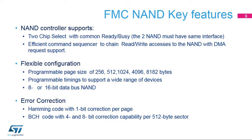The FMC controller features a NAND memory controller supporting up to two NAND devices of the same type and a common Ready-Busy signal, programmable page size up to 8 kilobytes, programmable timing parameters, and an 8-bit or 16-bit interface. The NAND memory controller has hardware error detection and correction supporting Hamming code with 1-bit correction per page, and BCH code with either 4-bit or 8-bit correction per 512-byte sector.